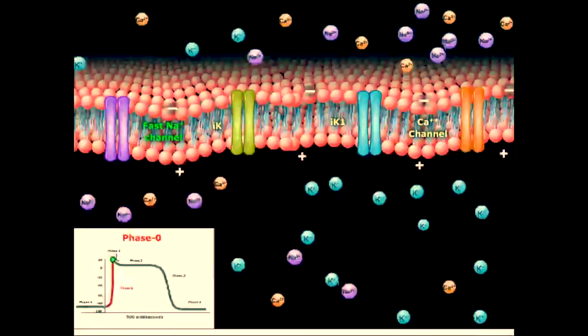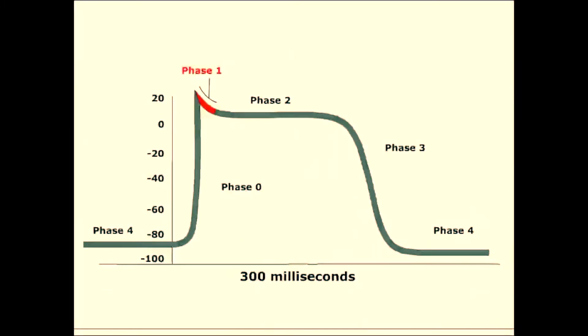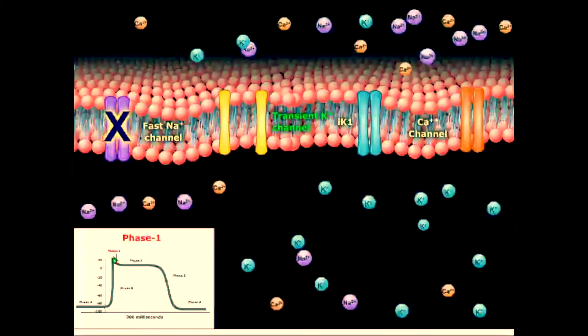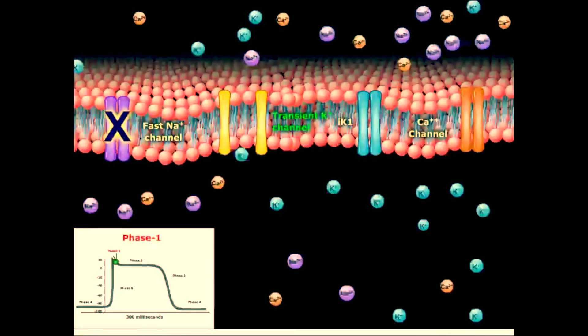We will now proceed to phase 1. Phase 1 consists of slight repolarization. This is due to the inactivation of fast sodium channels, and a transient rapid efflux of potassium.